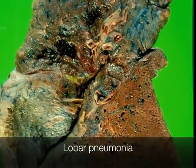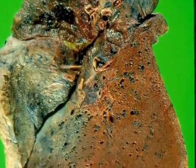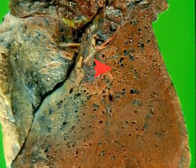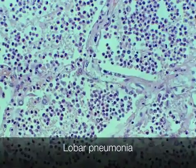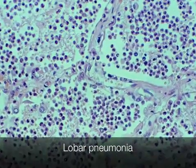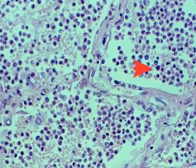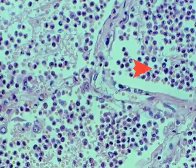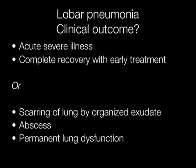The lower lobe of this lung shows features of lobar pneumonia — it is solid and airless. Histologically, the alveoli contain a diffuse infiltrate of predominantly neutrophil polymorphs. Lobar pneumonia is an acute, severe illness. Usually there is complete recovery with early treatment, but sometimes there is scarring of the lung by an organised exudate with abscess formation and permanent lung dysfunction.